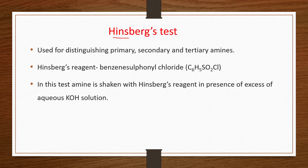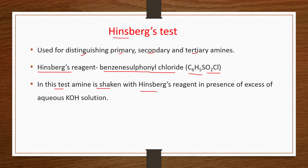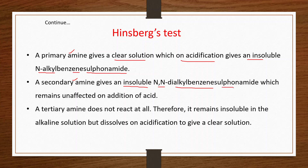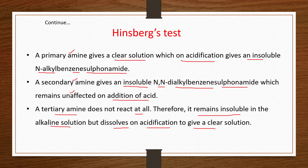Hinsberg test is used for distinguishing primary, secondary, and tertiary amines. Hinsberg's reagent is benzenesulfonyl chloride (C₆H₅SO₂Cl). The amine is shaken with Hinsberg's reagent in the presence of excess aqueous KOH. A primary amine gives a clear solution which on acidification gives an insoluble N-alkylbenzenesulfonamide. A secondary amine gives an insoluble N,N-dialkylbenzenesulfonamide unaffected by acid. A tertiary amine does not react, remains insoluble in alkali, but dissolves on acidification.